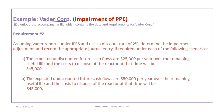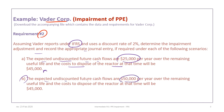This tutorial continues with the VaderCorp example and focuses on Requirement 2, specifically Requirements 2A and B. We are now assuming that Vader reports under IFRS versus ASPE, and we have to prepare the appropriate journal entries under each of the following scenarios. Scenario A: undiscounted future expected cash flows are $25,000 per year, with the expected cost to dispose of the reactor at the end of its useful life of $45,000. Scenario B: the expected undiscounted future cash flows are $50,000 per year, and the expected cost to dispose of the reactor is also still $45,000.